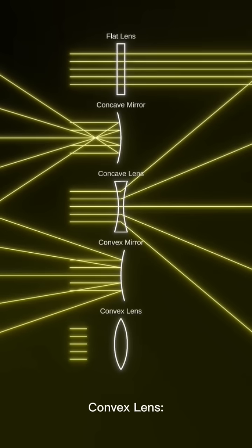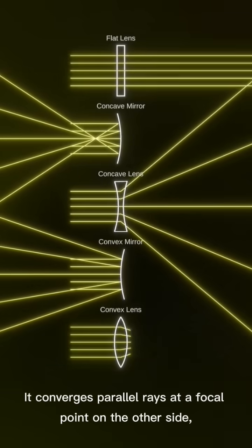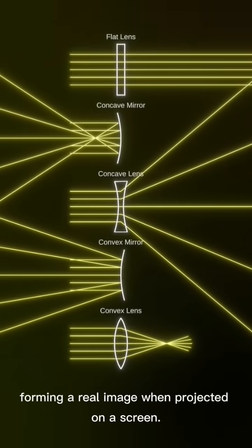Convex Lens. A convex lens bends light rays inward. It converges parallel rays at a focal point on the other side, forming a real image when projected on a screen.